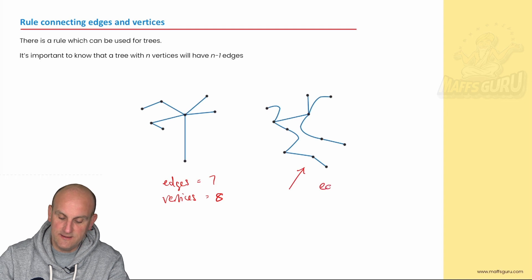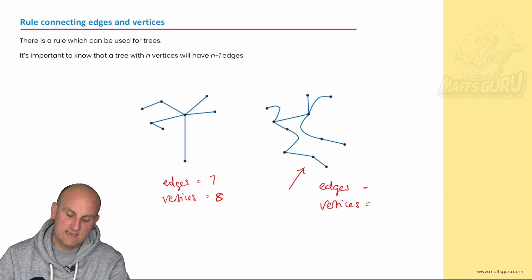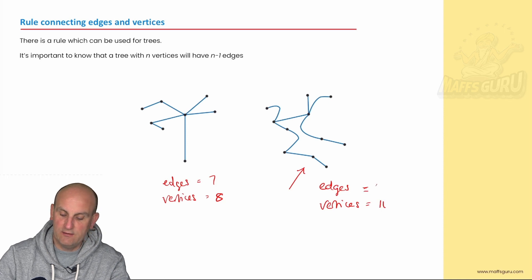Now one result on its own isn't enough to prove a rule. So let's see what we can do here. How many edges are there and how many vertices are there? So let's have a look. Let's count the vertices first. One, two, three, four, five, six, seven, eight, nine, ten. There are 11 vertices. How many edges are there? One, two, three, four, five, six, seven, eight, nine. And there are 10.